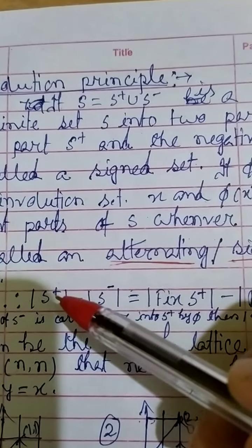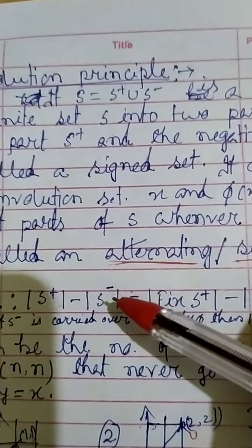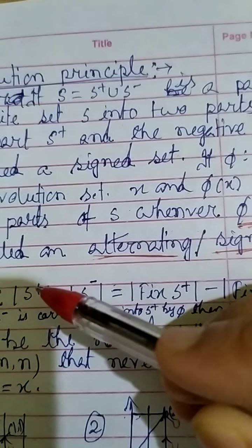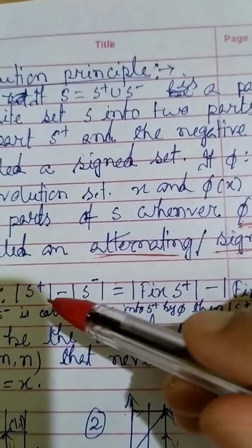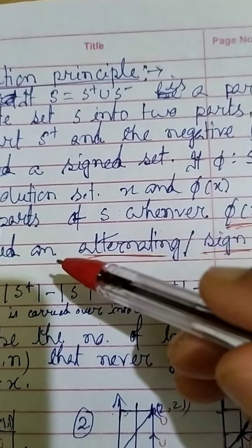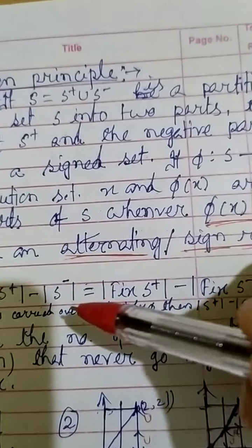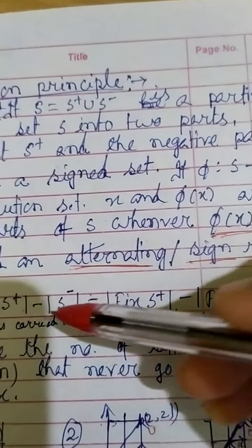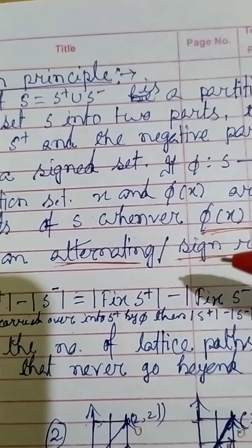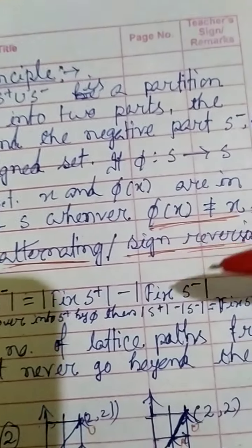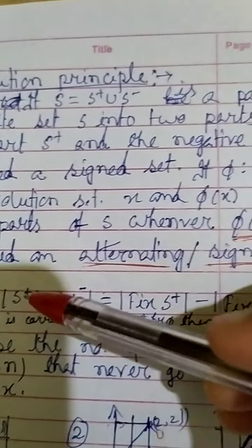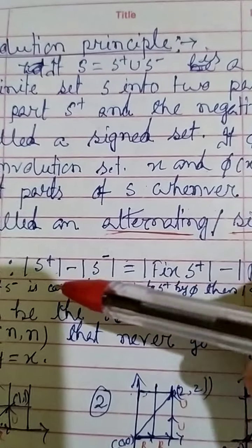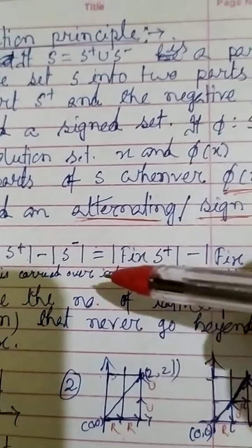Now, if we count the elements of S-positive minus S-negative with respect to this involution, elements of S-positive where x belongs to S-positive means φ(x) equals x by definition — that is, x is a fixed point. So S-positive counts how many fixed points there are in terms of φ.